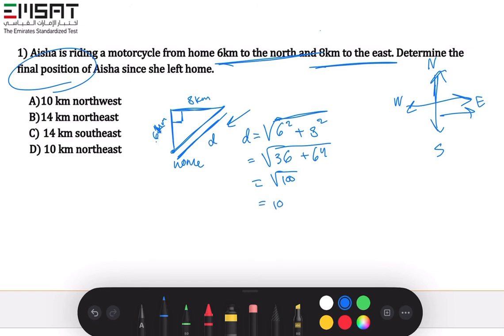So the answer is 10, and to find the direction we add the two directions she went in which is north and east, so it's 10 northeast. The answer is D.